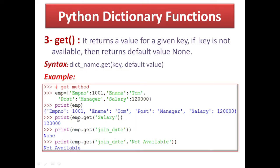For example, here is a dictionary: EMPNO: 1001, ename: Tom, post: manager, salary: 1,20,000. आपने EMP.get('salary') लिखा — so you are getting 1,20,000 returned. EMP.get('join_date') — since this key is not in the dictionary, it returns None. EMP.get('join_date', 'Not Available') — then it returns 'Not Available'. So using get() you can retrieve any key's value. Alternatively, EMP['salary'] also returns 1,20,000 — get() can be used in place of that.